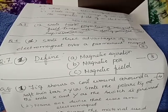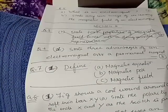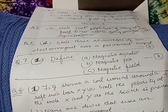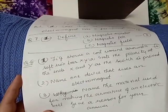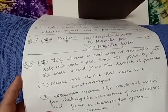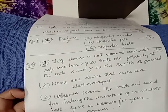Question number 8: The figure shows a coil wound around a soft iron bar XY. (A) State the polarity at the ends X and Y as the switch is pressed. (B) Name one device that uses an electromagnet. (C) Name the material used for making the armature of an electric bell and give a reason for your answer.